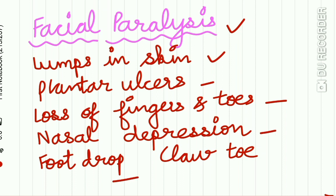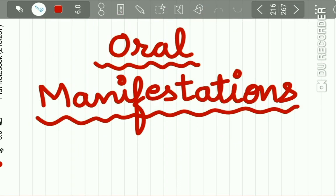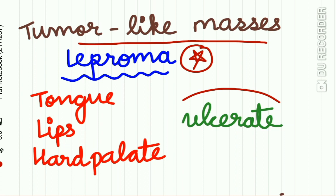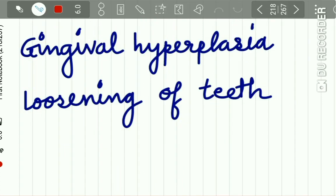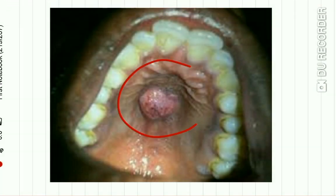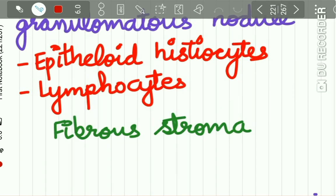Oral manifestations: tumor-like masses called lepromas may occur in the oral cavity of leprosy patients. These lepromas mostly occur on the tongue, lips, hard palate, and with subsequent trauma these lepromas may ulcerate. There may also be gingival hyperplasia and loosening of teeth. Here you can see the classic leproma lesion on the hard palate of a leprosy patient.